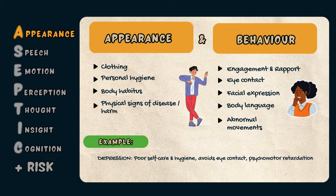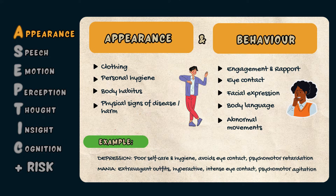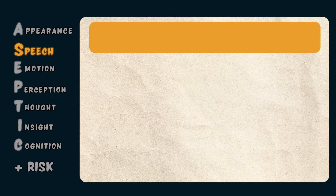In a patient with mania, you may notice they appear to wear extravagant bright outfits, are hyperactive, maintain intense unrelenting eye contact, and can have psychomotor agitation. The S in ASEPTIC stands for Speech.